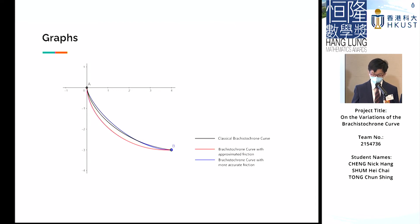However, when μ gets larger, the frictional forces become more dominant and the shape of the curves with friction will deviate more from the classical Brachistochrone curve.